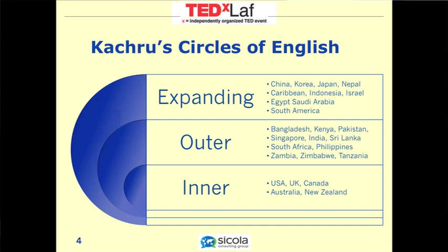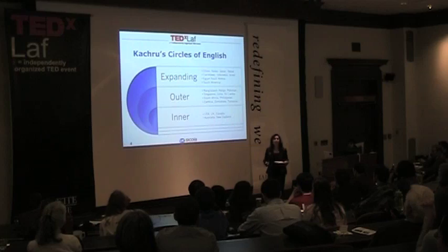The inner circle is where we are — countries that have a historical and cultural basis in the English language. The outer circle is made up primarily of countries where English has become institutionalized, but as a result of a long history of colonization in one form or another — countries like Singapore, Pakistan, India, Philippines, and so on.